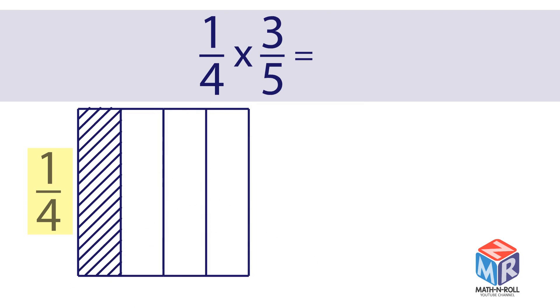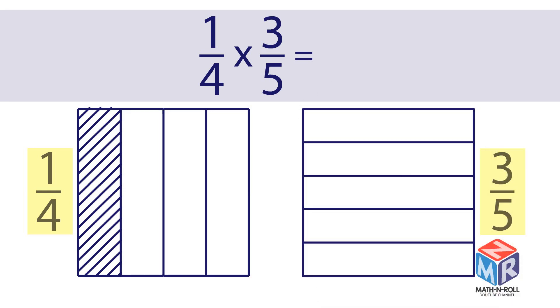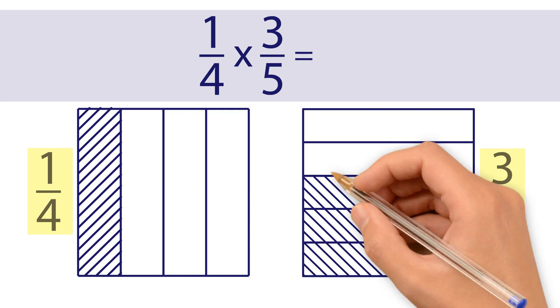The shaded column represents the fraction 1 4th. 3 5ths. The second model has five rows. Three out of five rows are shaded. The shaded rows represent the fraction 3 5ths.